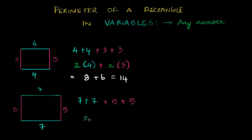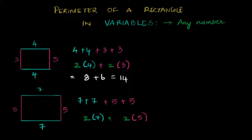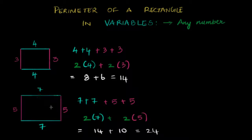So here, this will be two times seven plus two times five. Two times seven is 14, plus two times five is 10. And this is 24. So that's the perimeter of this rectangle.